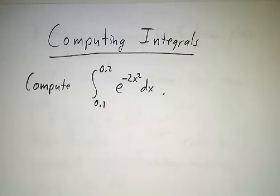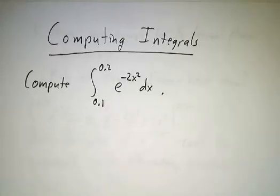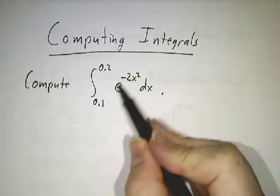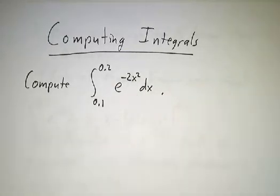Suppose that you wanted to figure out the integral from 0.1 to 0.2 of e to the minus 2x squared dx. Now, your calculator has an exponential key. You've got no trouble evaluating this function, but how in blazes are you going to do the integral?